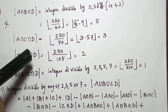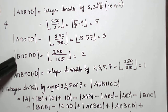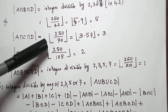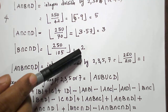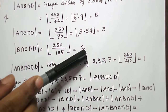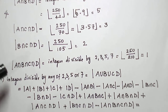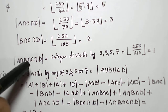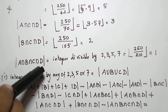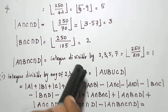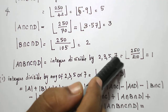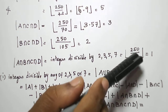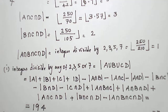B∩C∩D: divisible by 3, 5, and 7, that is 105, so floor(250/105) gives approximately 2. Now for all four sets: A∩B∩C∩D, divisible by 2, 3, 5, and 7, that is 210. Floor(250/210) gives only 1 — so there is only one such integer.